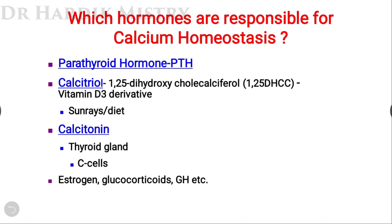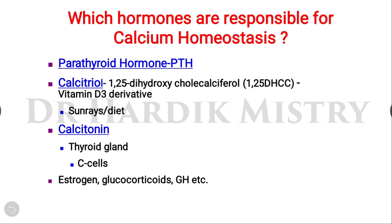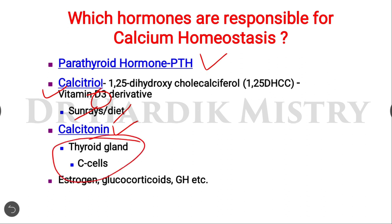Which hormones are responsible for calcium homeostasis? There are several key hormones. First, parathyroid hormone. Second, calcitriol — also known as 1,25-dihydroxycholecalciferol or 1,25-DHCC — which is a vitamin D3 derivative obtained from sunlight and dietary sources. Third, calcitonin, released from the C-cells of the thyroid gland. Other hormones that participate include estrogen, glucocorticoids, and growth hormone.